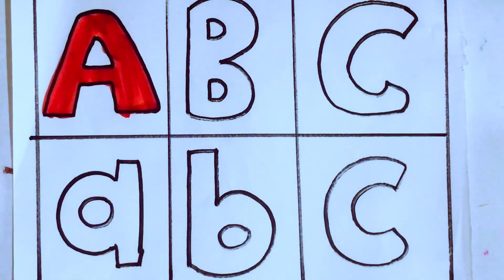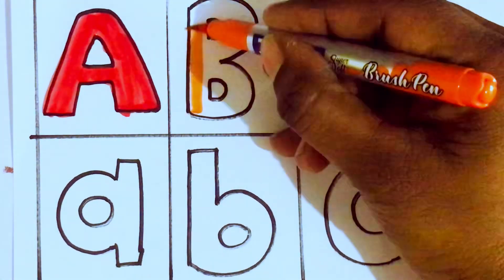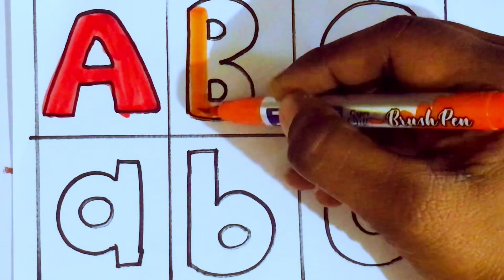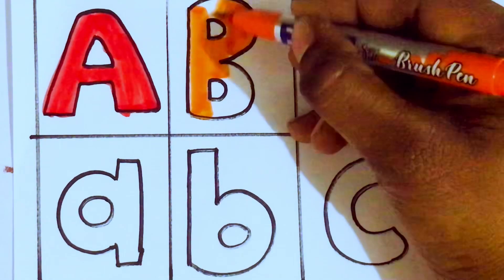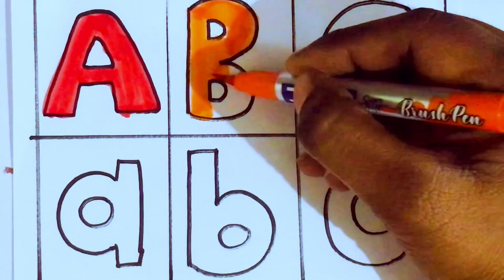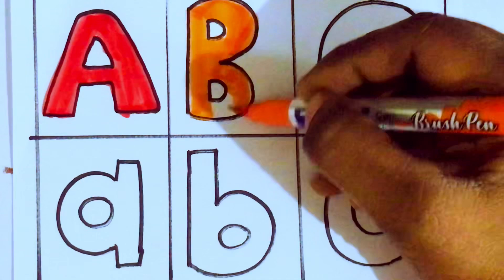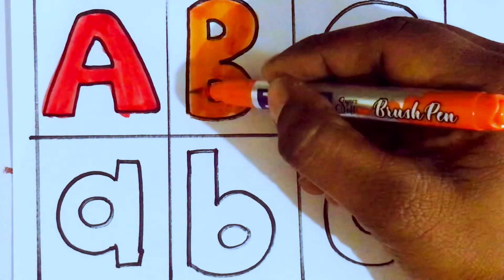Orange color, B. Which letter kids? B. B for ball. B, A, L, L. Ball.